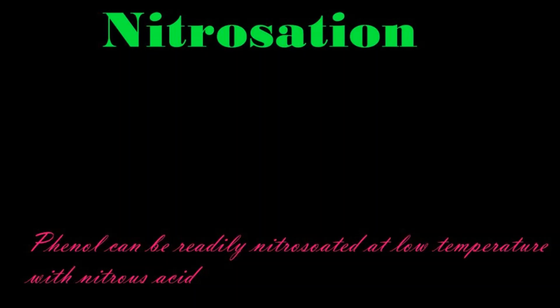In this video we are going to learn about the nitrosation of phenol — the addition of a nitrosyl group. We are going to add this NO group to the benzene ring. Nitrosation is the addition of nitrous acid, HNO2. This is called nitrosation, and HNO2 is the nitrosating agent.